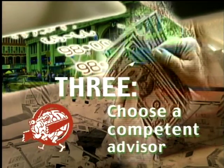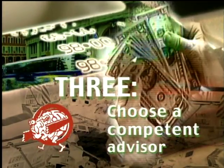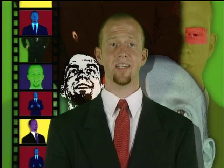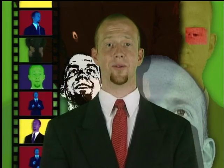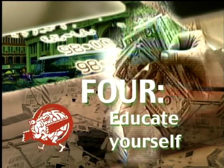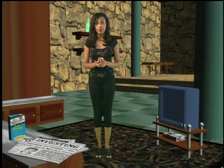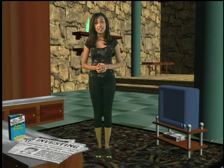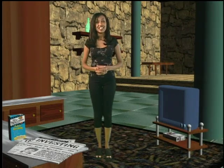Three: choose a competent advisor. If you really do not know what you are doing, or if you're nervous about getting started, get help. There are people out there who know how to help you. Four: educate yourself. By buying this tape, you've taken the first step in educating yourself. But remember, financial planning is a lifelong process, so keep educating yourself about changes and innovations.